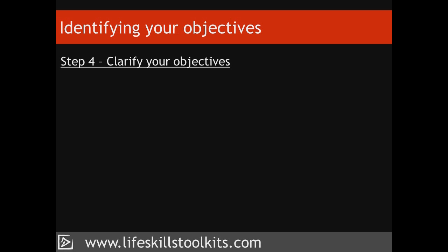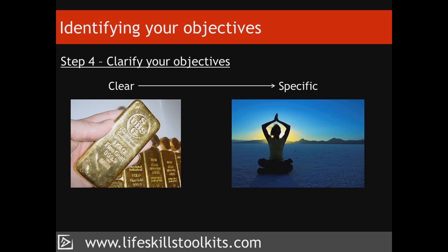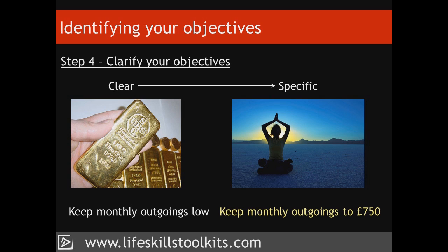Step 4: Clarify your objectives. If you're clear about what it is you want, you're more likely to get it. This step is about being specific. Look through your list of fundamental objectives and check to see if you can make any of them more specific. For example, 'To be wealthier' — are we talking financial wealth, spiritual wealth, or a combination of both? If a fundamental objective is to keep monthly outgoings low, it would help to know the amount of money that we shouldn't exceed. If our fundamental objective is a destination, providing clarification helps us know that we've arrived.